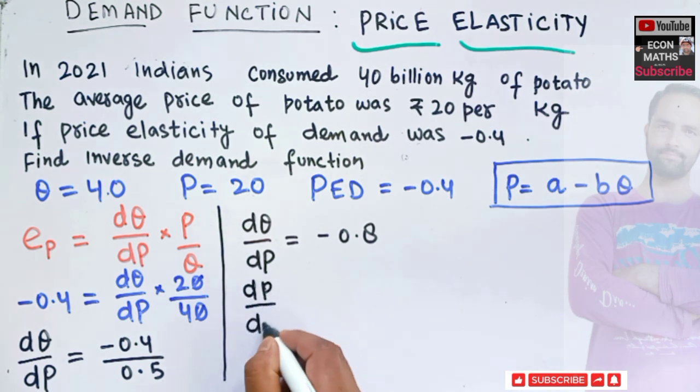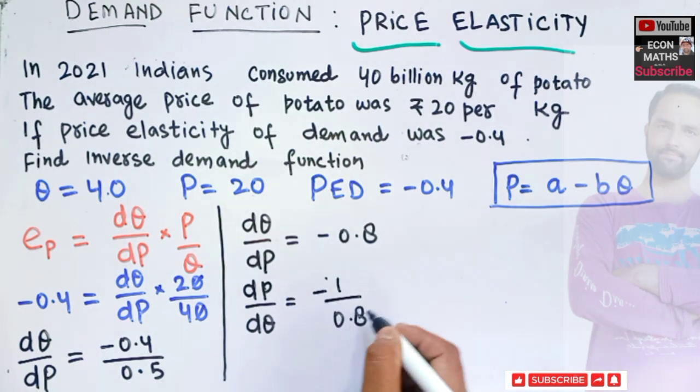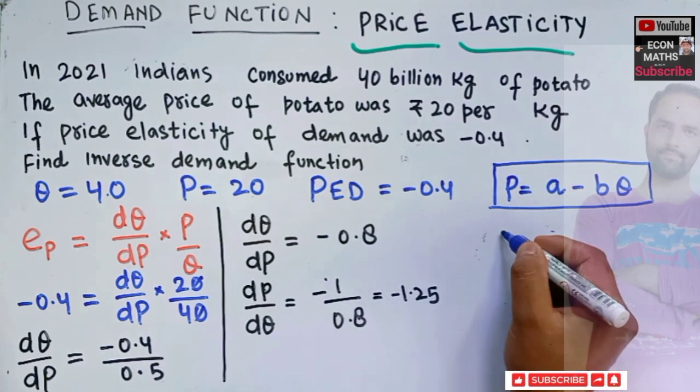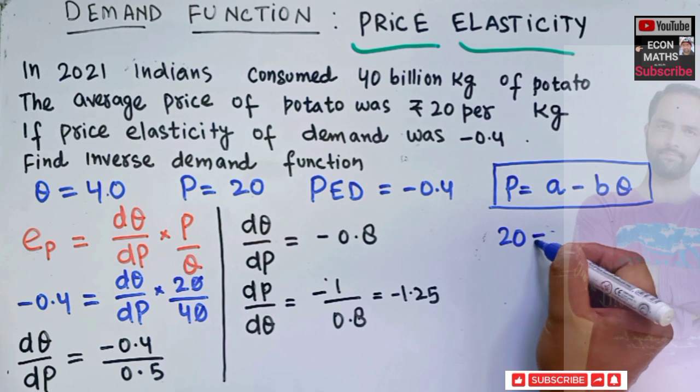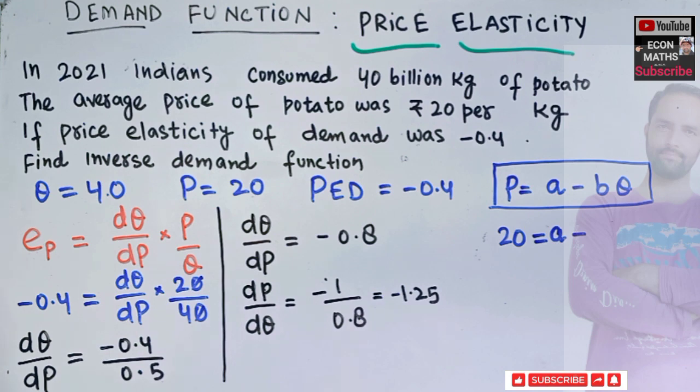dP upon dQ will be equal to, so reciprocating both sides, it will become minus 1 upon 0.8. So price is 20, is equal to A, we need to find out this, minus B.